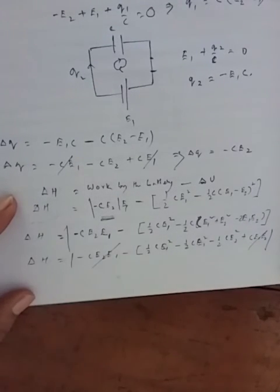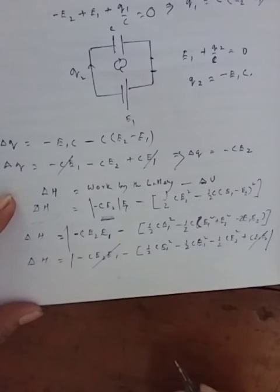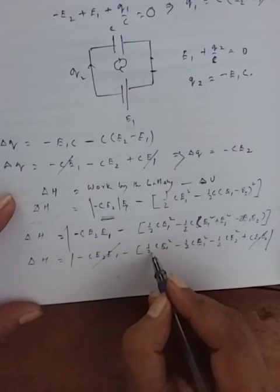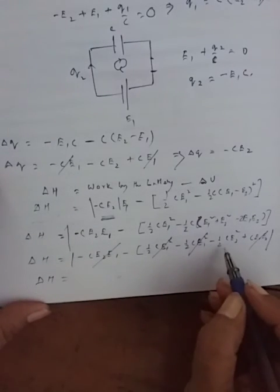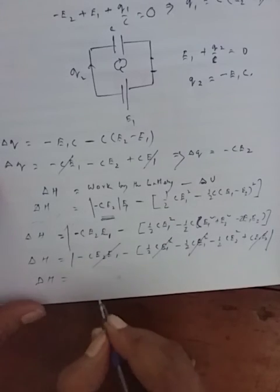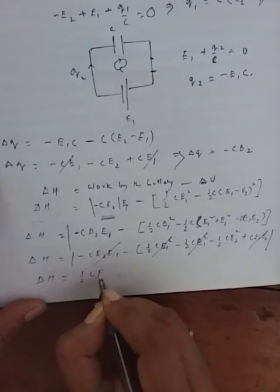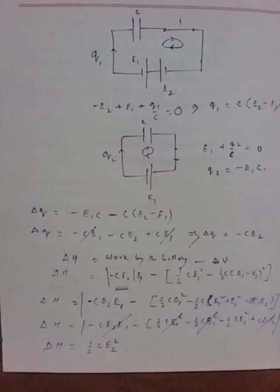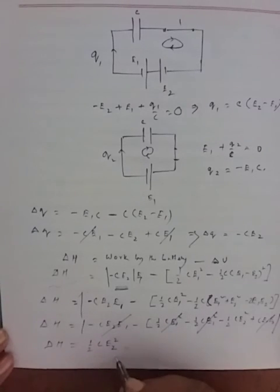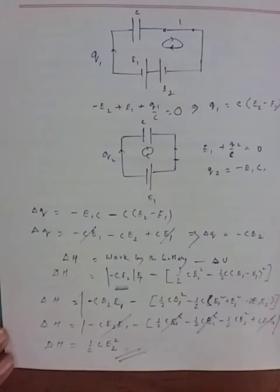The CE1·E2 terms cancel, and the CE1² terms also cancel. With minus-minus giving plus, I finally get the heat produced equals ½CE2². As you can see from the figure, the result is independent of E1. This is your final answer: heat produced equals ½CE2².